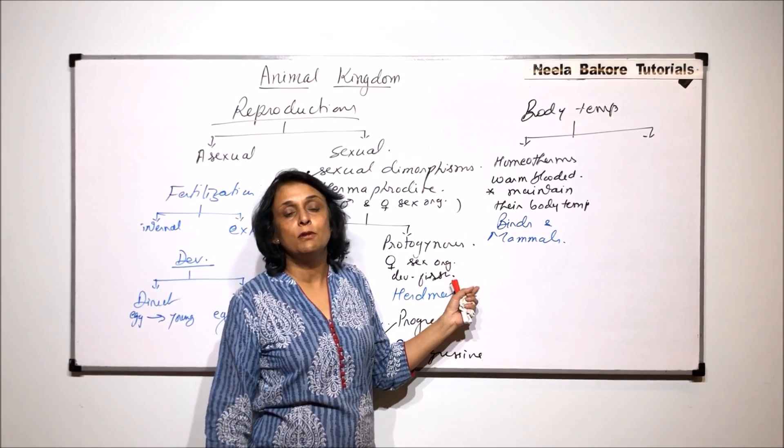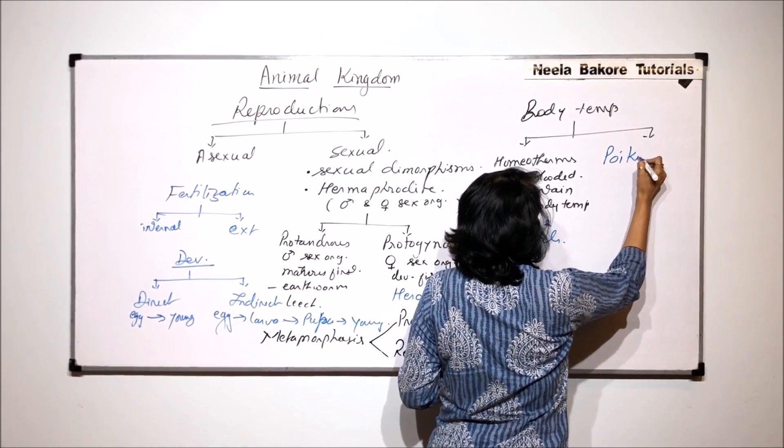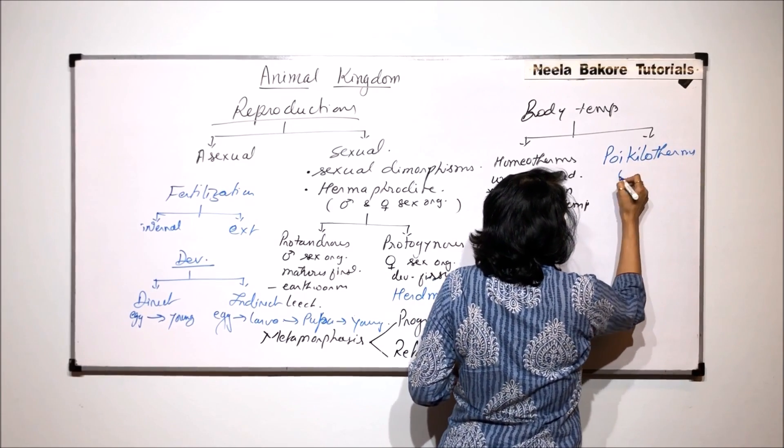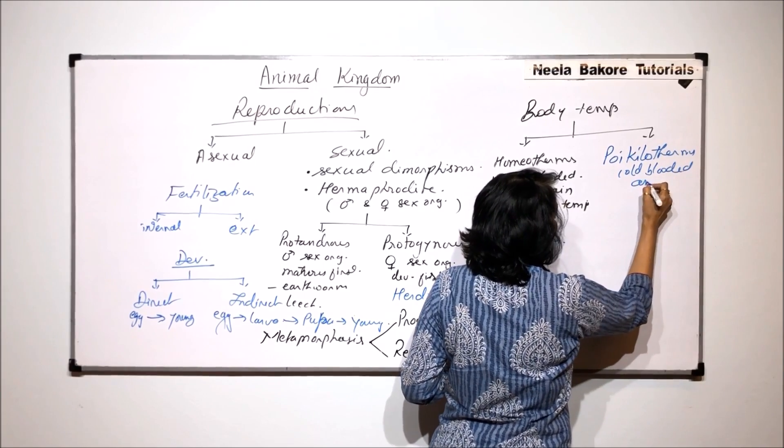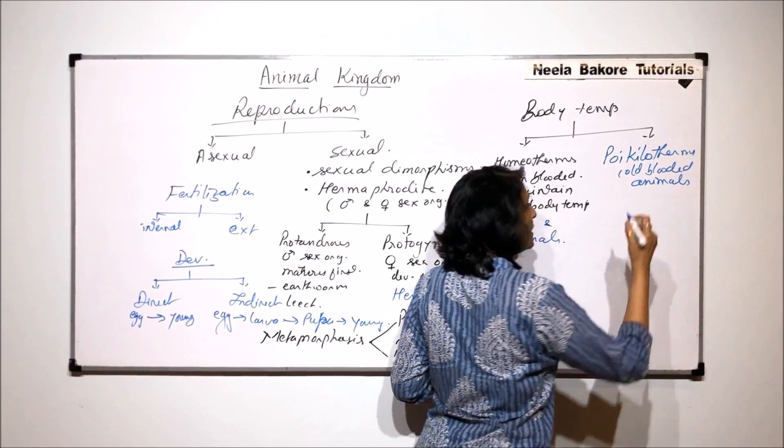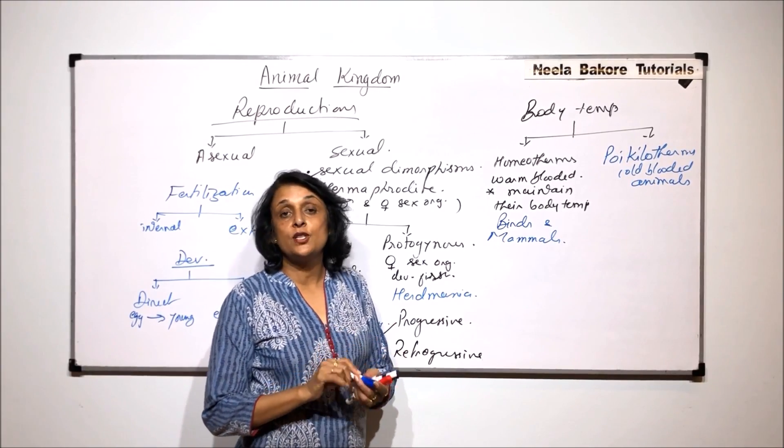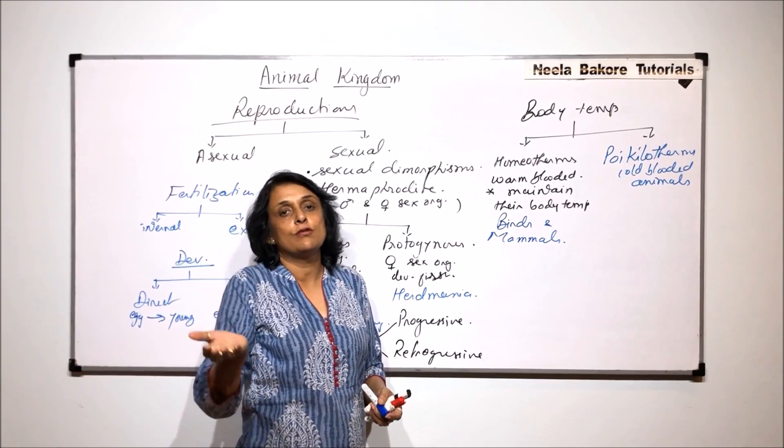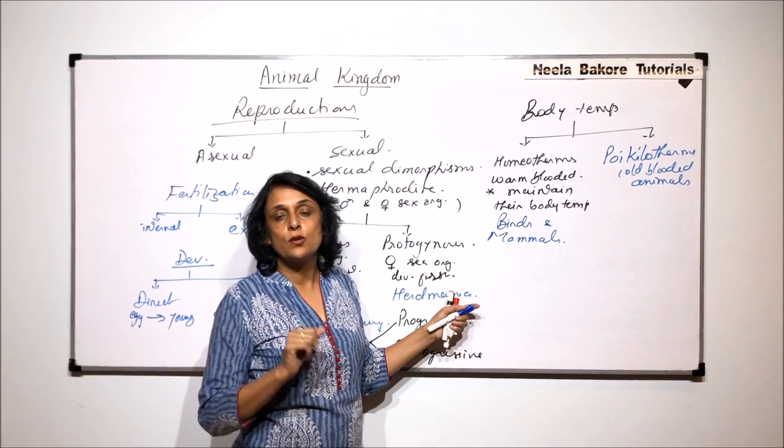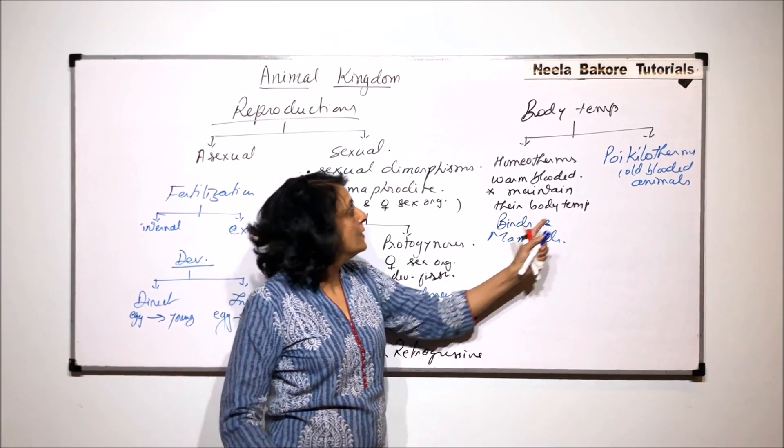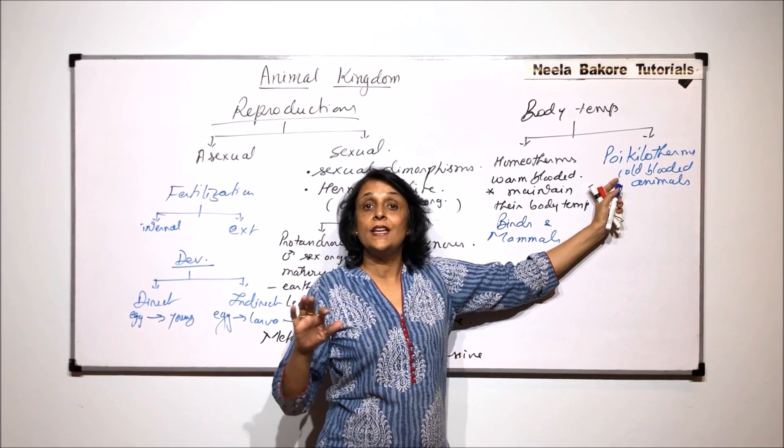Some animals are not able to do that. They are called poikilotherms. Poikilotherms are commonly known as cold-blooded animals. Their body temperature changes according to the surrounding. That means if outer temperature increases, their body temperature also starts to rise. And if outer temperature falls, then body temperature also starts to fall. So they are cold-blooded. Body temperature is not constant. It keeps changing.